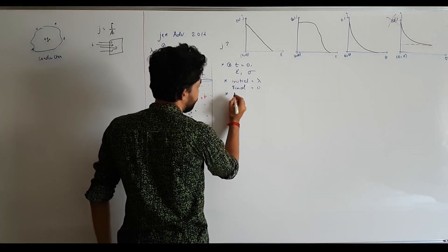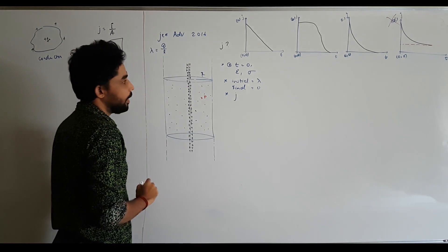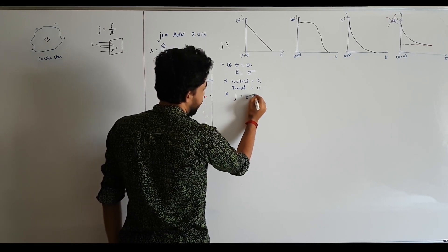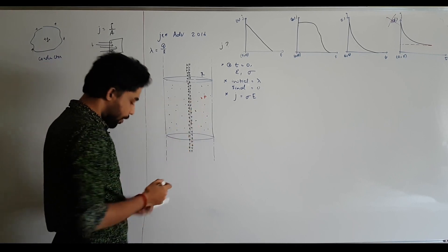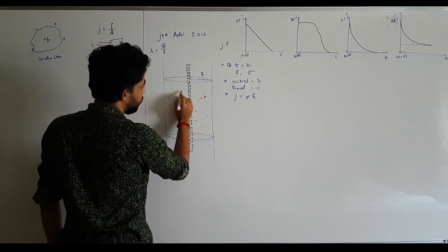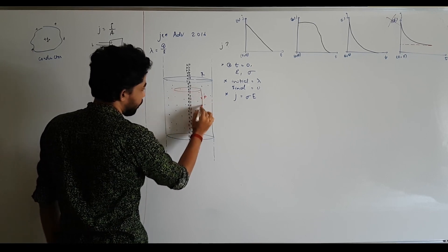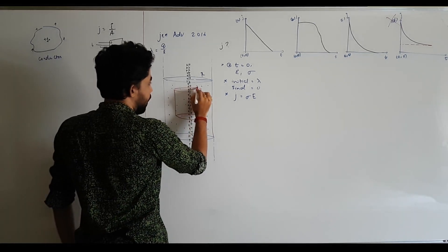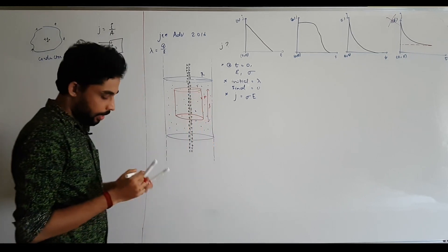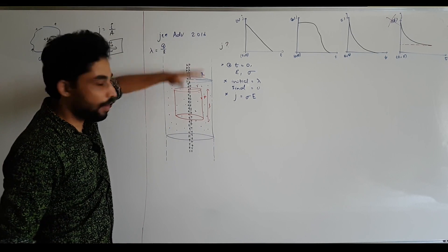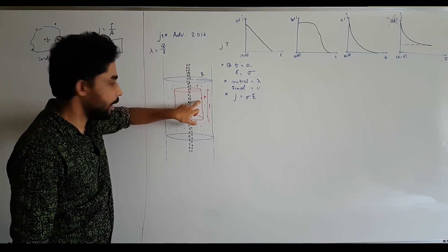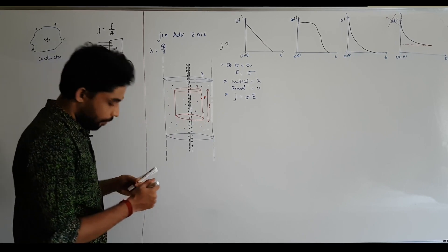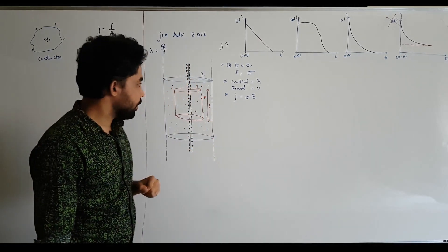Let's start with equations. I need to connect current density with time. I will take a point P and draw a Gaussian surface — a cylinder, because of the symmetry — with radius R and length L. Since the outer cylinder is infinitely long, I assume this inner Gaussian cylinder to determine how current density varies at point P.